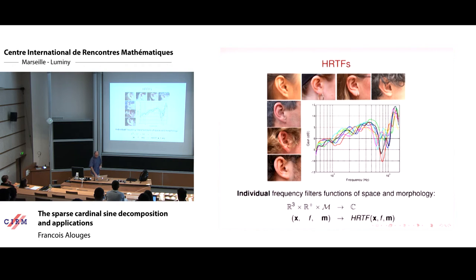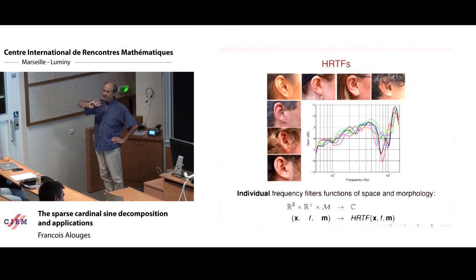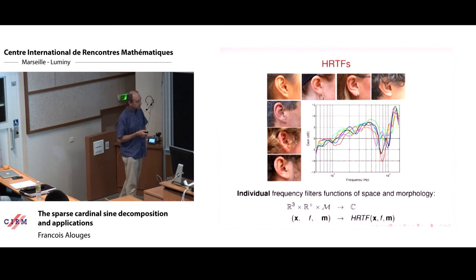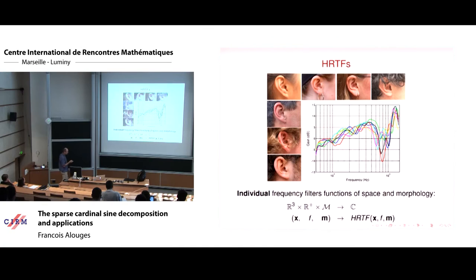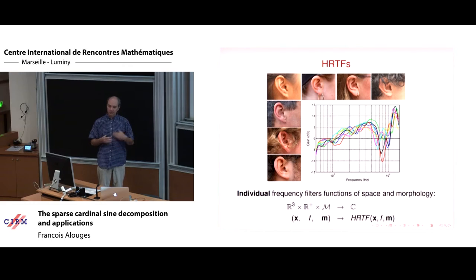This is exactly analogous to 3D vision: if you see two different pictures from the two eyes, the brain reconstructs the 3D scene. The filters are called HRTFs — Head Related Transfer Functions. A HRTF is a transfer function that depends on the direction of the sound and the frequency. You give as input the frequency and the position of the sound, and this gives you a filter — the HRTF — which you can measure.